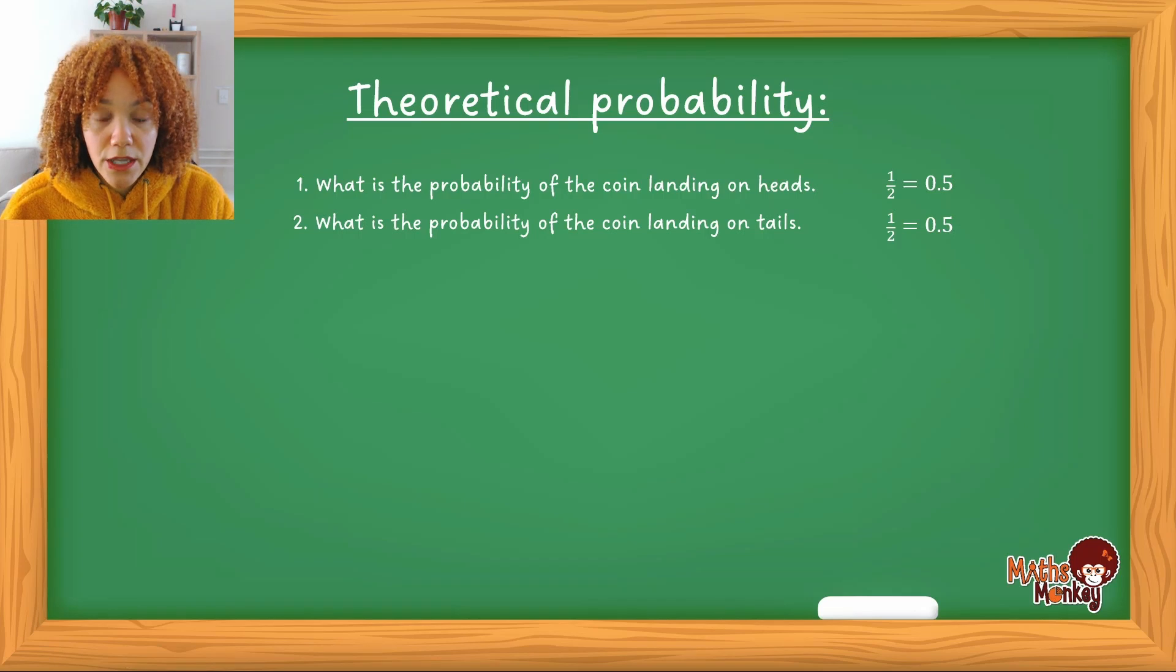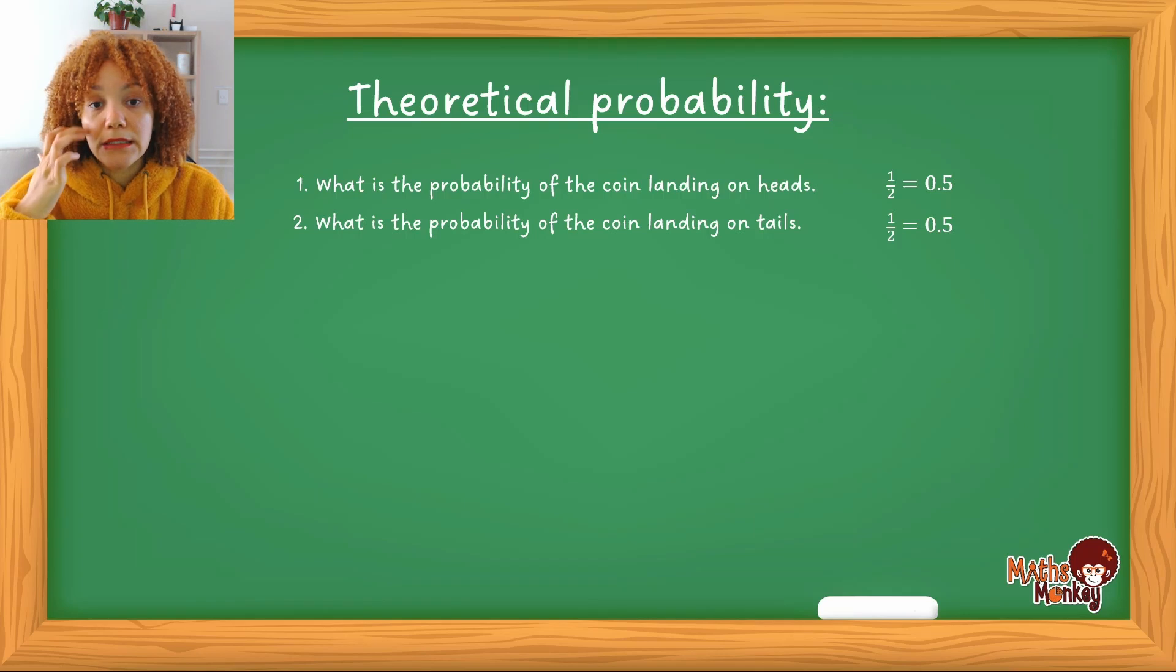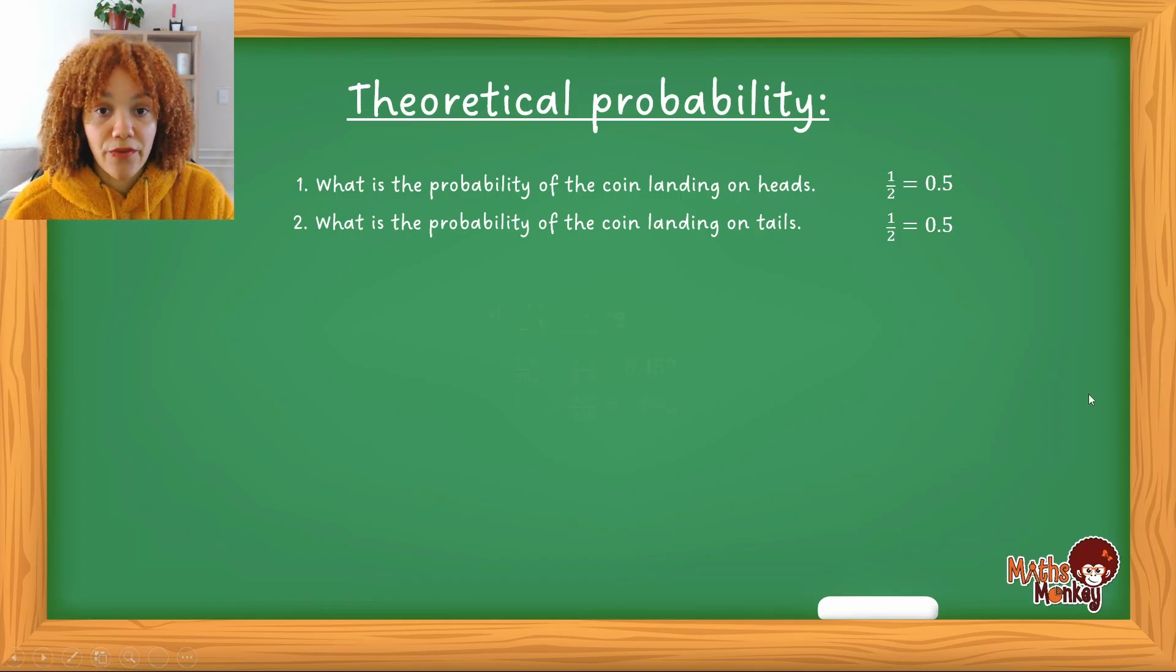Okay so the important thing to note here is theoretical, again we're guessing what is the chance. And so in both cases 0.5. So if you look at the relative frequency you'll see that it will be based on the calculations in the previous slide at 0.452 and 0.548.